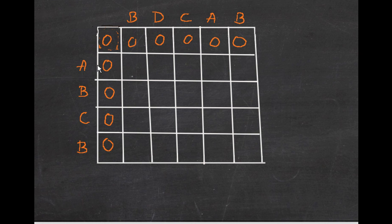So we just match the characters — first we check if they match. If they do not match, we take the maximum of the upper cell C[i-1][j] and the left cell C[i][j-1] and put it here. A and B do not match, so we take the maximum from these two. We take the upper one, which is 0. The arrows determine where you took the maximum from — we took the 0 from the upper cell.